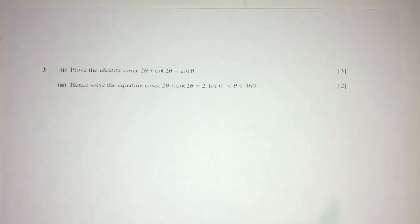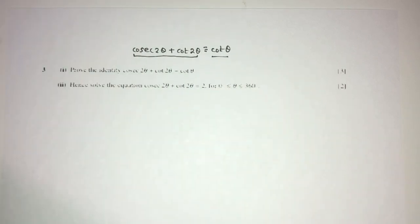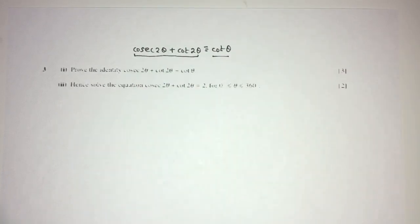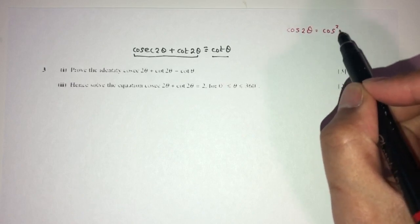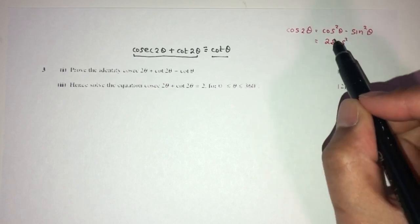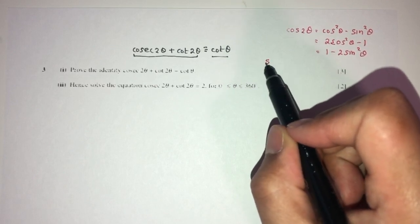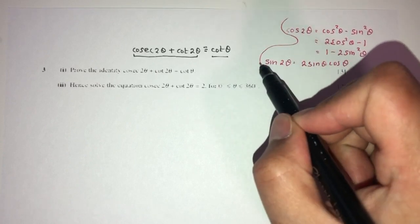Now let's move on to question number 3. Here we have to prove the identity: cosec(2θ) + cot(2θ) = cot(θ). We have to show the left-hand side becomes the right-hand side. The double angle has disappeared into a single angle, so we'll need double angle formulas. We know cos(2θ) = cos²θ − sin²θ, which simplifies to 2cos²θ − 1 or 1 − 2sin²θ. And sin(2θ) = 2sinθ cosθ.